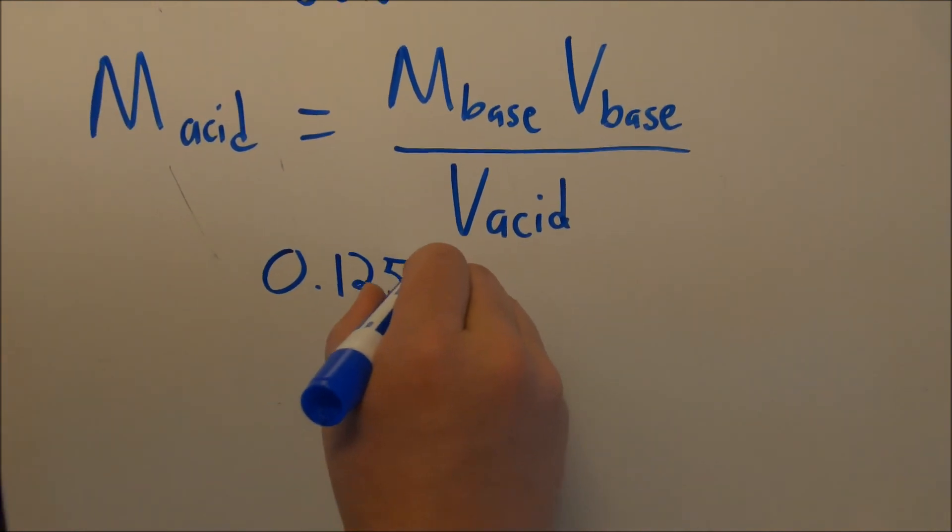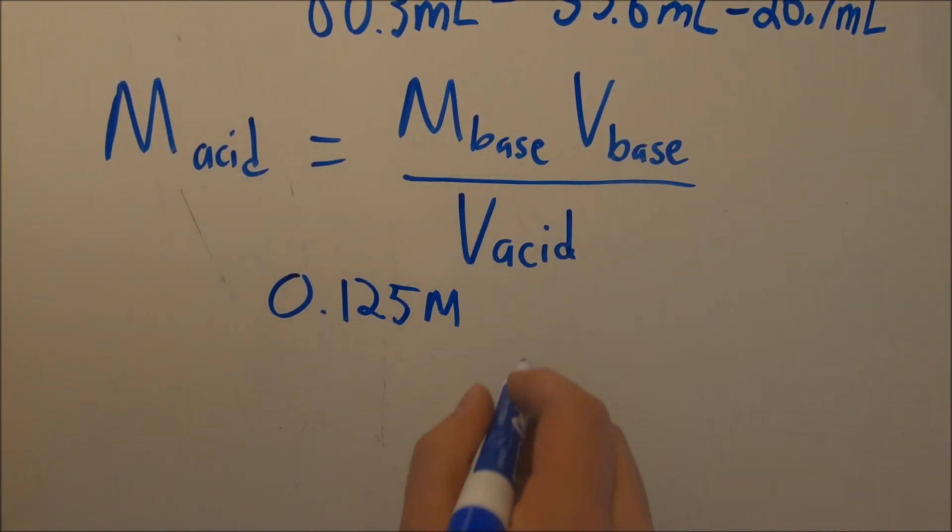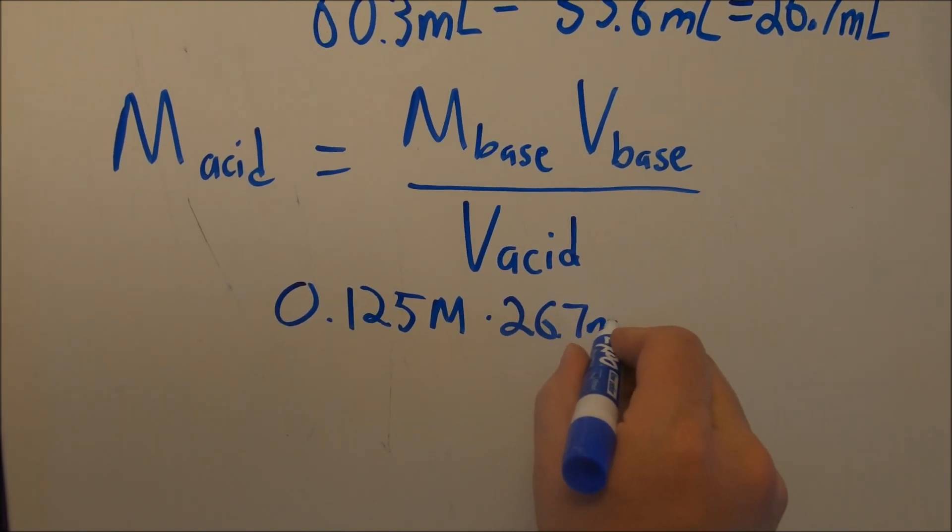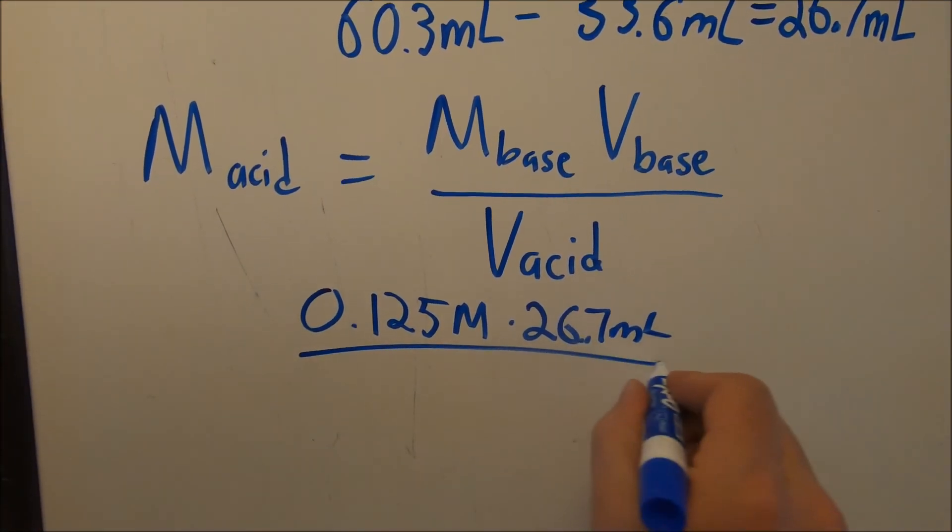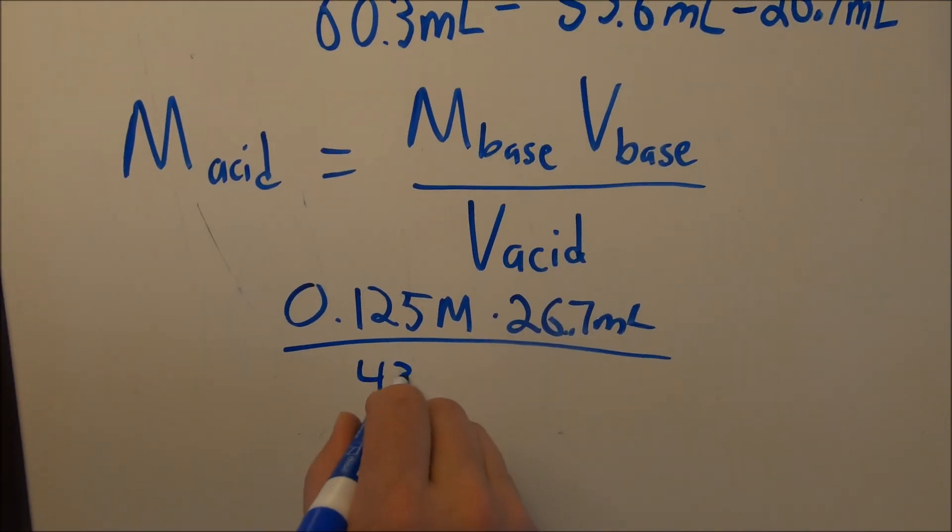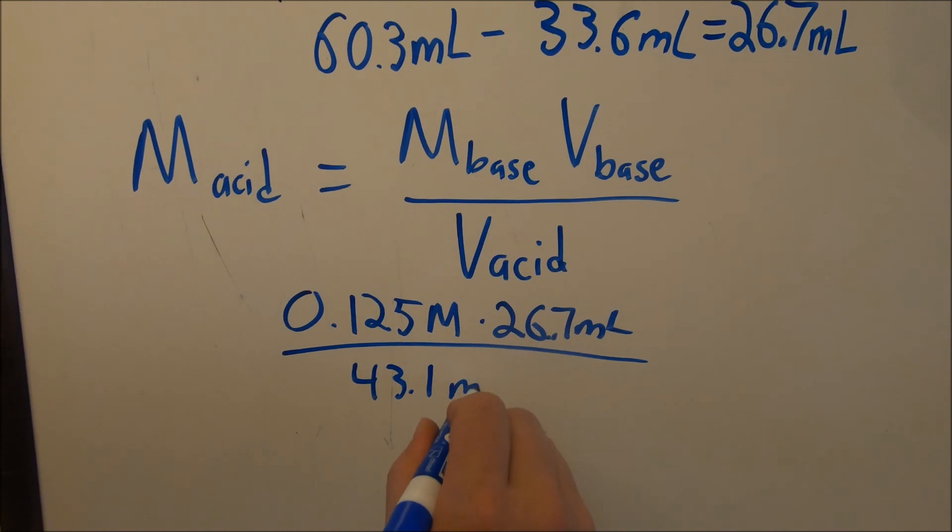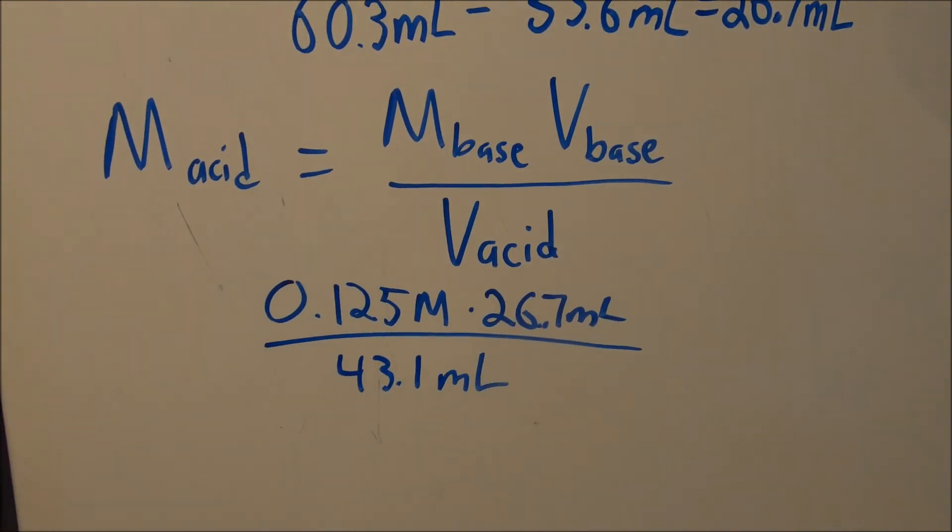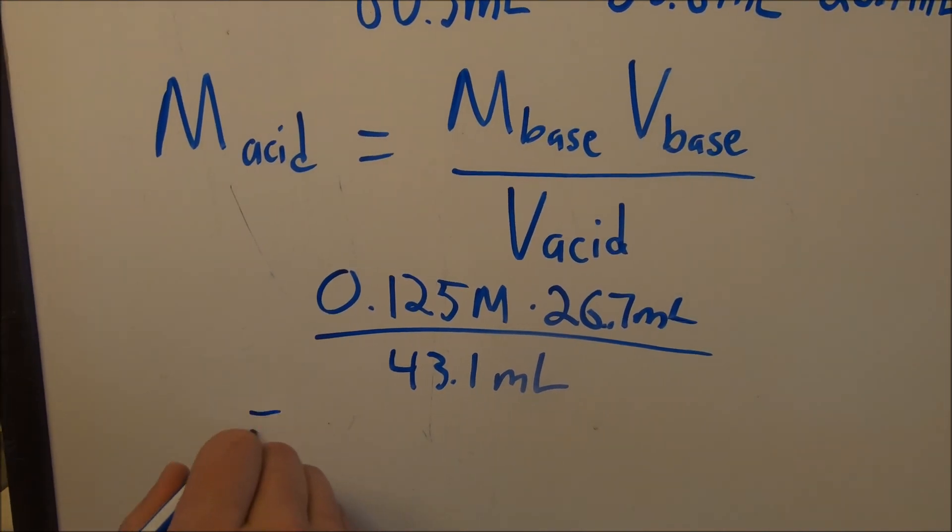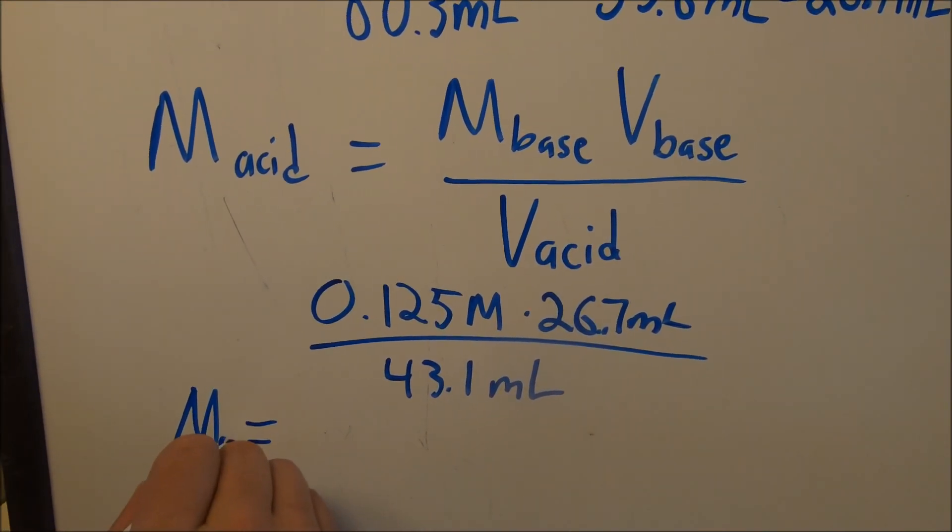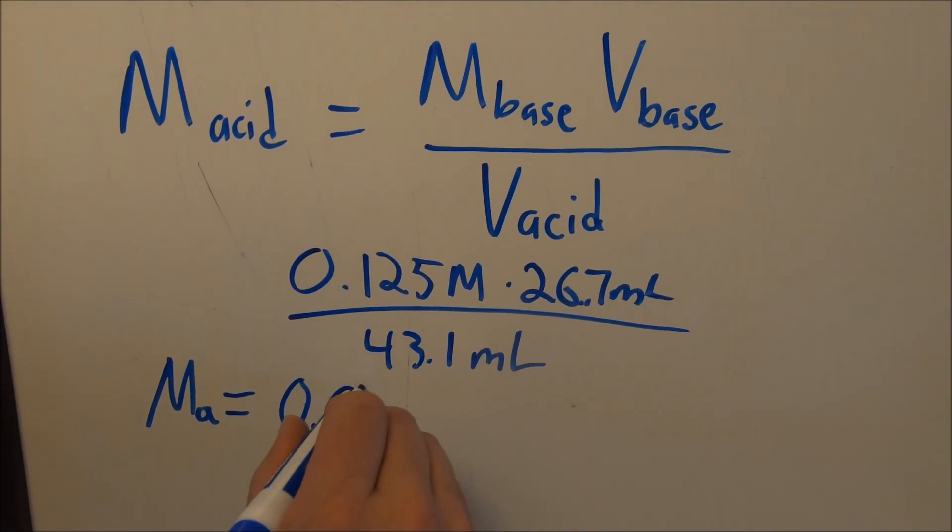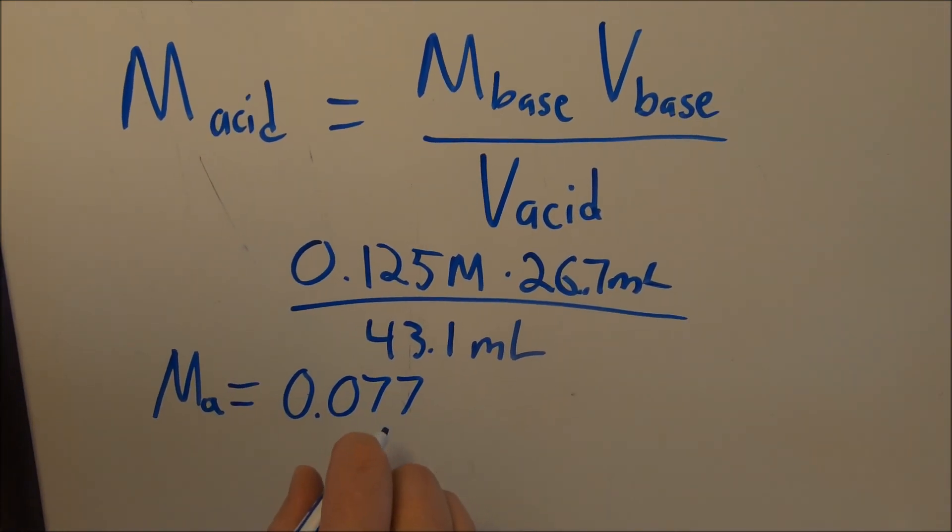Our molarity of the base: 0.125 molar NaOH times that volume of the base, 26.7 milliliters, divided by the volume of the acid that we started with, that 43.1 milliliters. When we go through to calculate that all out, it ends up being that molarity of the acid ends up being about 0.0774.